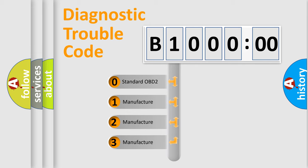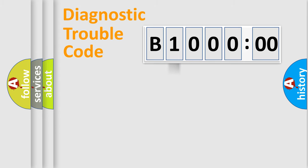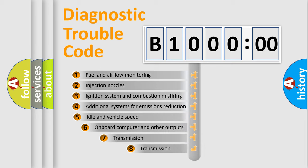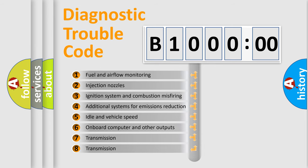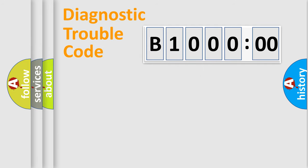If the second character is expressed as zero, it is a standardized error. In the case of numbers 1, 2, or 3, it is a manufacturer-specific error. The third character specifies a subset of errors. The distribution shown is valid only for the standardized DTC code. Only the last two characters define the specific fault of the group.